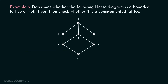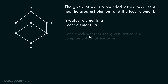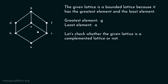Now let's see another example: determine whether the following Hasse diagram is a bounded lattice or not, and if yes, check whether it is a complemented lattice or not. First of all, the given lattice is a bounded lattice because it has the greatest element G and the least element A. Let's check whether it is a complemented lattice.